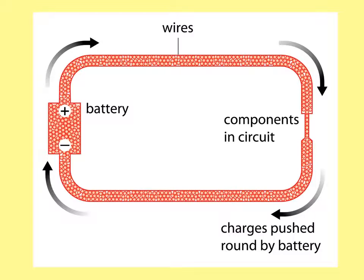The current is the rate of flow of charge — it represents how fast the peas or charges are moving. The voltage relates to how much energy those peas or electrons have. Current is how fast the charges are moving around the wires, and voltage is the amount of energy per unit charge. If the battery gives the electrons more energy, there will be more voltage in the circuit.